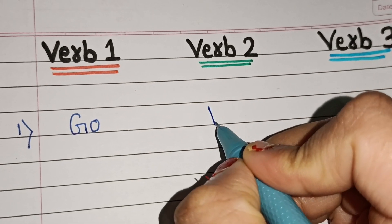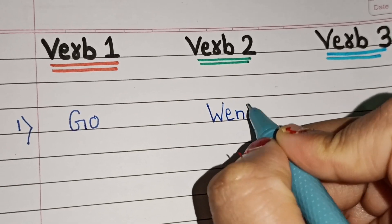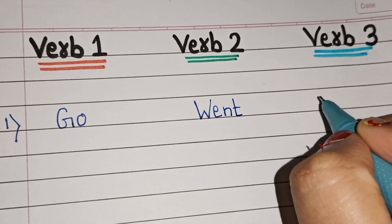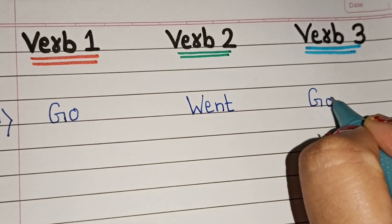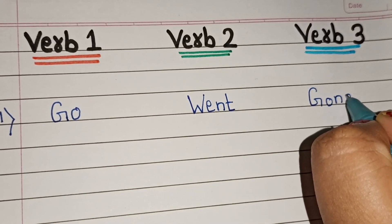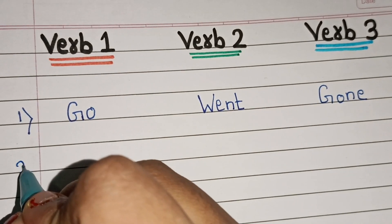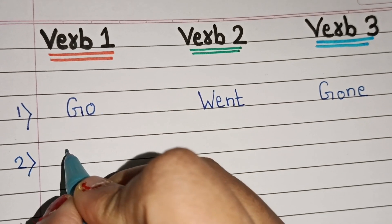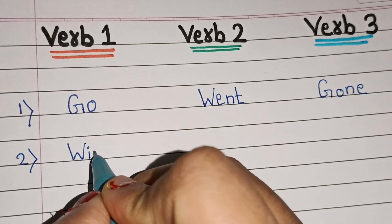So let's start. First: go — verb 1; went — verb 2; and gone — verb 3.